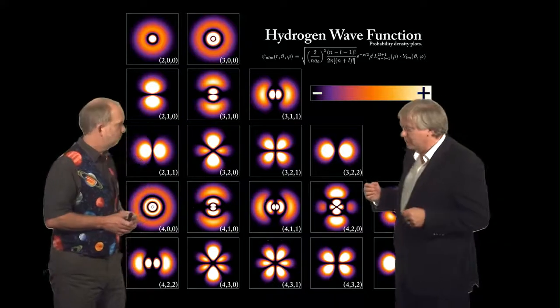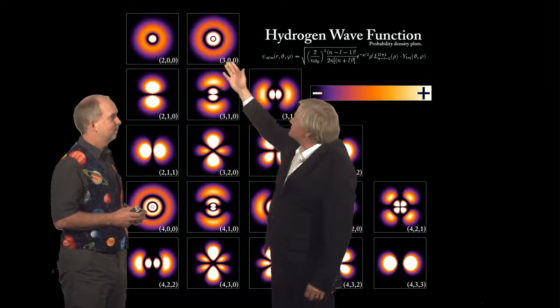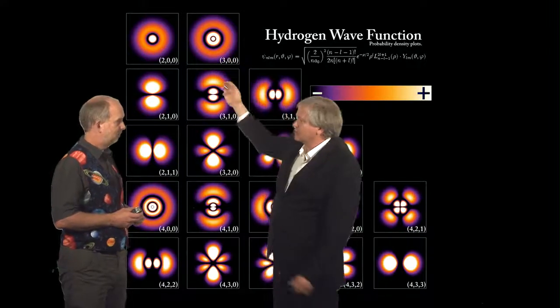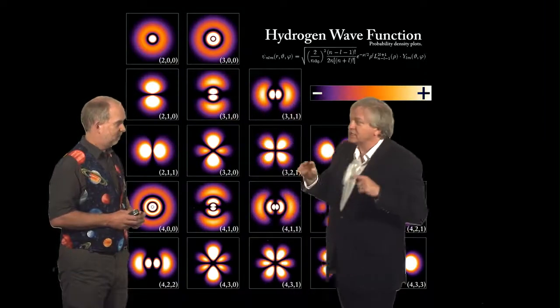And so, for example, if this were the ground state of iron, you might expect all of its 26 electrons to pile down right next in the lowest energy state. But it's not allowed to do that.